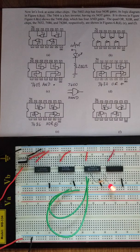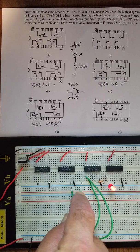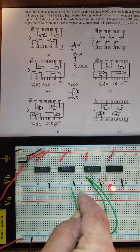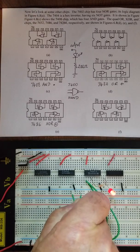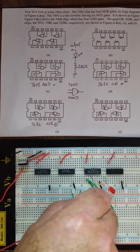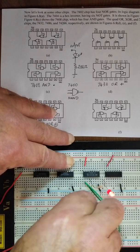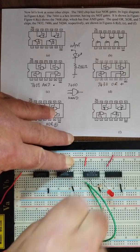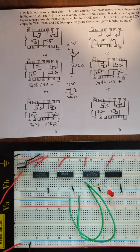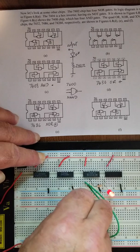For the exclusive OR, instead of memorizing the table, remember: when the inputs are equal — both 0,0 or both 1,1 — the output is 0. When they are different — one is 0 and the other is 1 — the output is 1. As you see here, I have one input at low and one at high; that's different so the output is high. If I put both low, the LED turns off. If I put both high, the LED is off again because they're equal.